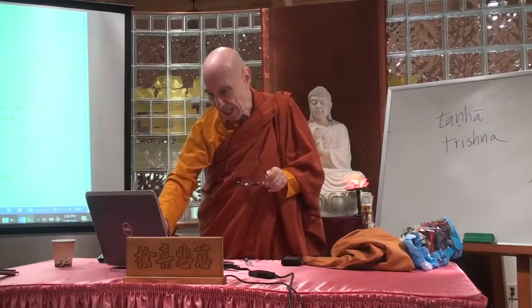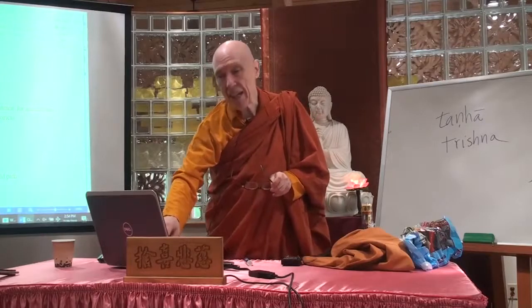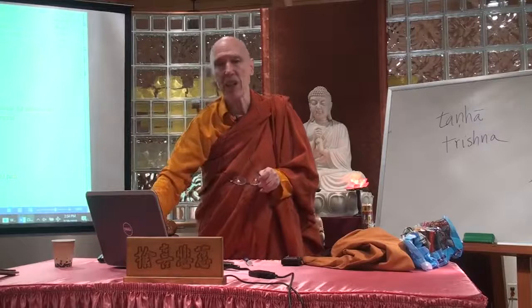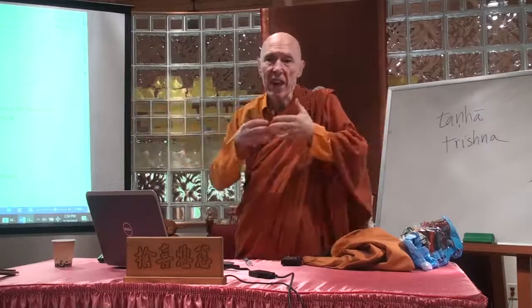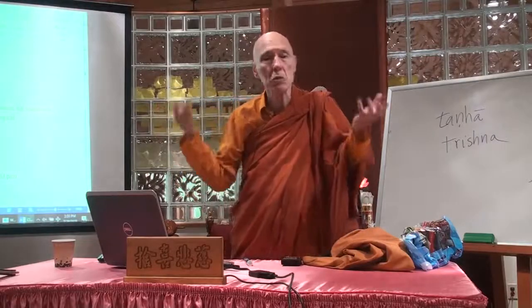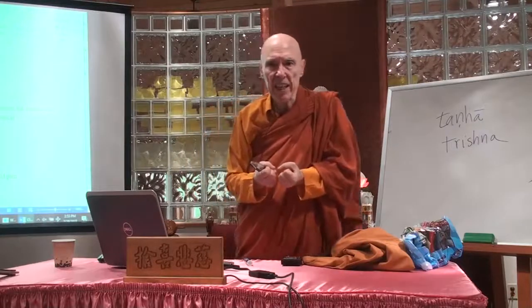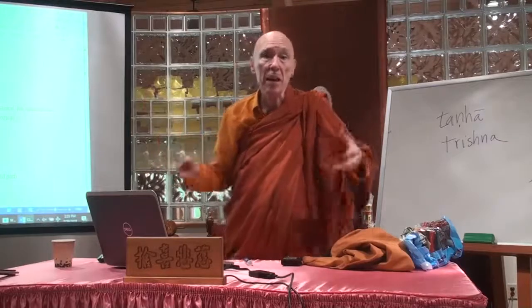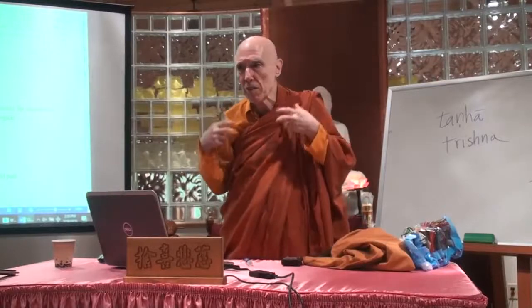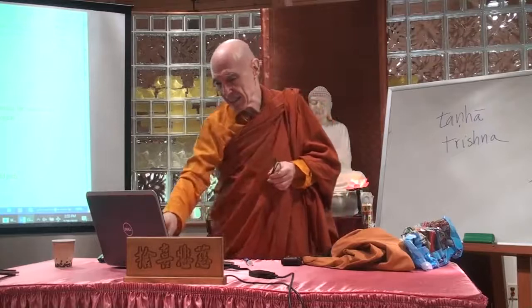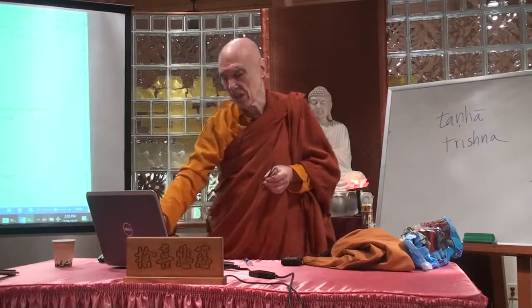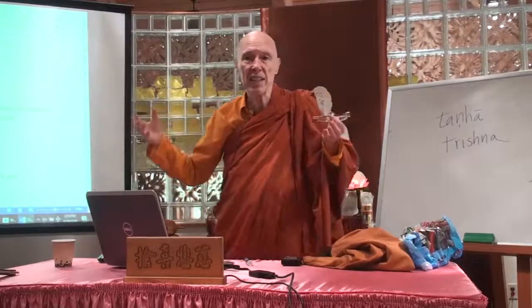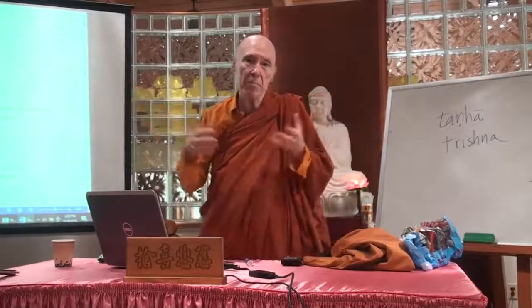The third noble truth is the cessation of dukkha, which comes through the elimination of craving. This has two stages corresponding to the two functions of craving. The psychological aspect: when craving is eliminated, there comes right here and now freedom from this dukkha — no more grasping, no more clinging, no more insatiable desire for what I don't have. There comes a kind of peace and serenity, fulfillment, inner freedom from the compulsive drives of craving. The metapsychological aspect: when craving is eliminated, the round of birth and death comes to an end, and there comes the liberation into that ultimate state of freedom — nirvana.